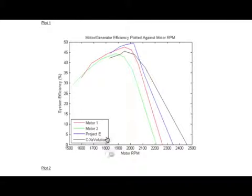In the bottom here we have motor RPM, and up here we have system efficiency. It's pretty obvious that the engine is performing most efficiently at around 2000 RPM.